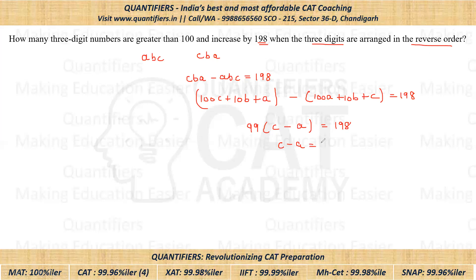So C minus A comes out to be 2. Now mind you, students — if C minus A equals 2, and it is given that the number is greater than 100, that means A has to be greater than or equal to 1. So if A equals 1, then C equals 3.